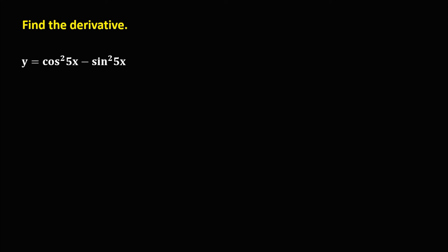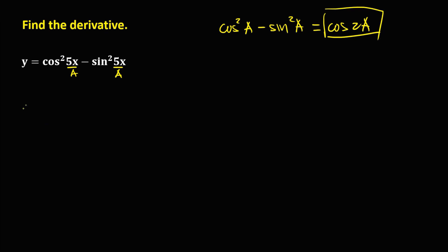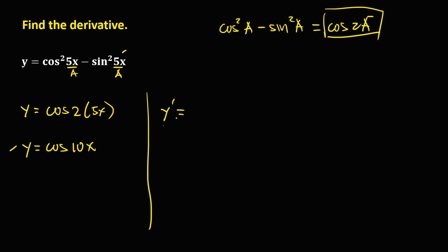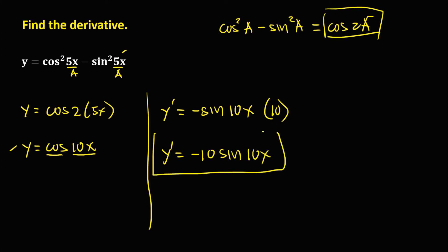For the last given, we use the double angle identity: cosine squared a minus sine squared a equals cosine 2a. Here a equals 5x, so y equals cosine 2a equals cosine 10x. The derivative of cosine is negative sine, times the derivative of 10x which is 10. So y prime equals negative 10 sine 10x. This is the derivative.